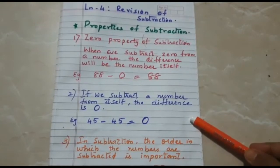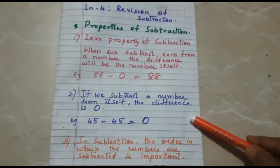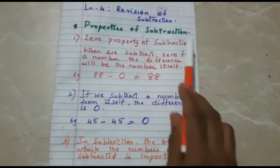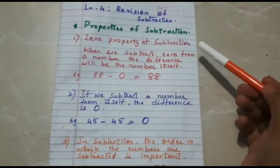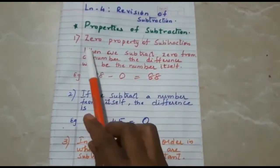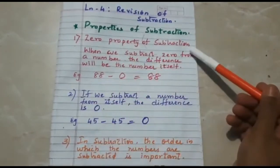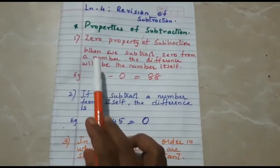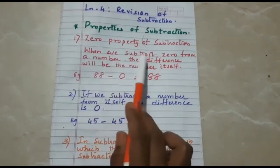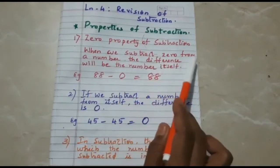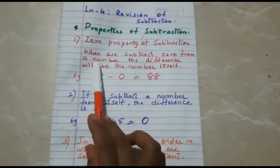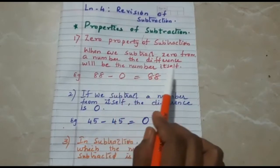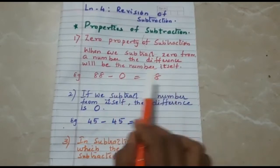Before going to the examples, I would like to discuss the properties of subtraction. The first property is the zero property of subtraction, which says when we subtract 0 from a number, the difference will be the number itself.